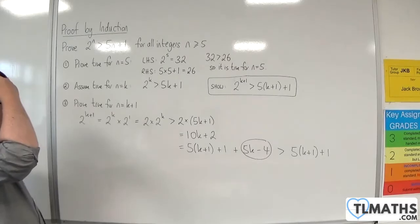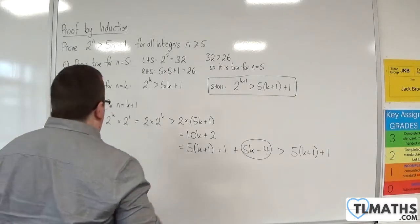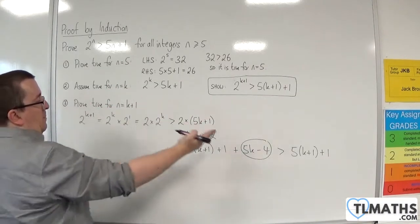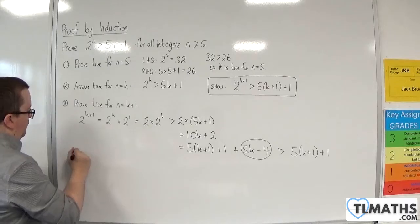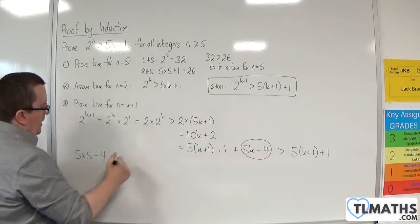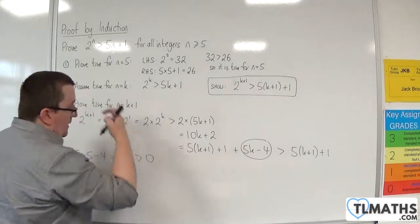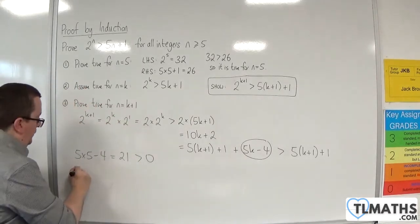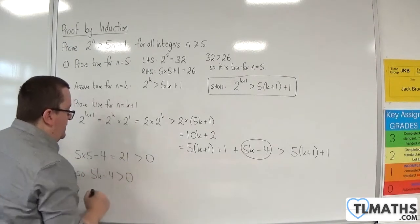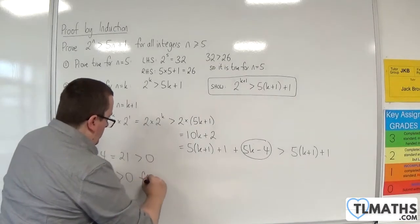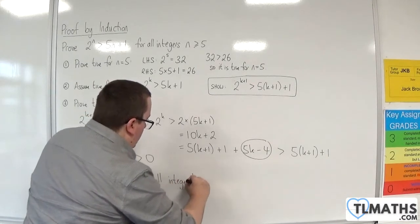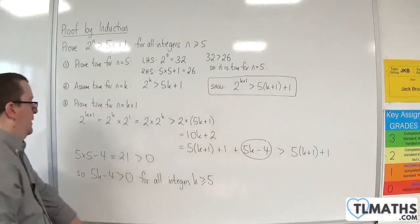So, what I need to consider is 5k minus 4. So, what I'm going to do is, because we're starting with n is 5, I'm going to plug in k is 5. So, 5 lots of 5 take away 4 is going to be 21, which is, of course, greater than 0. So, 5k minus 4 will be greater than 0 for all integers k greater than or equal to 5.